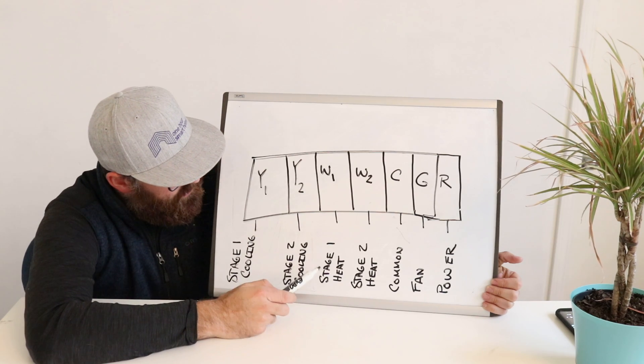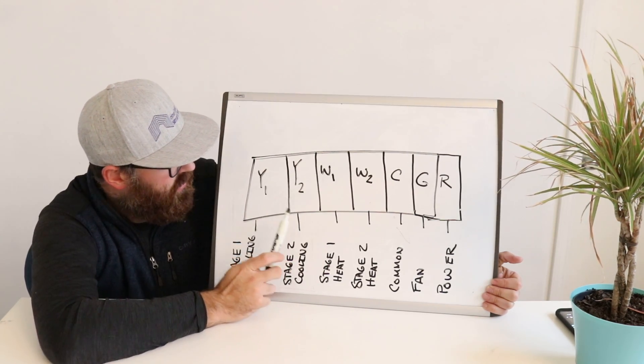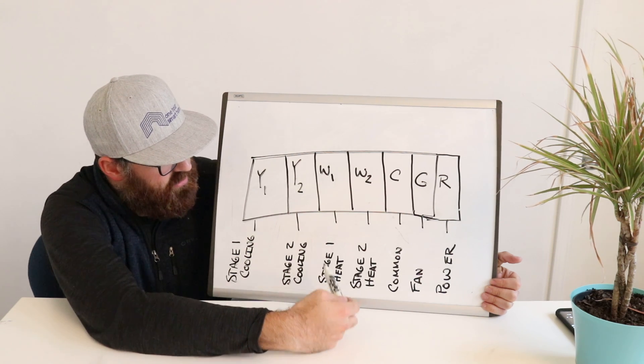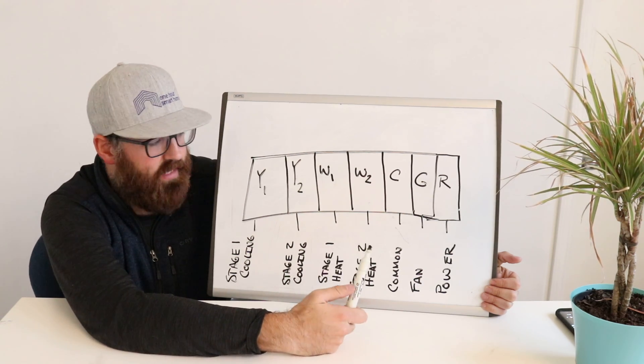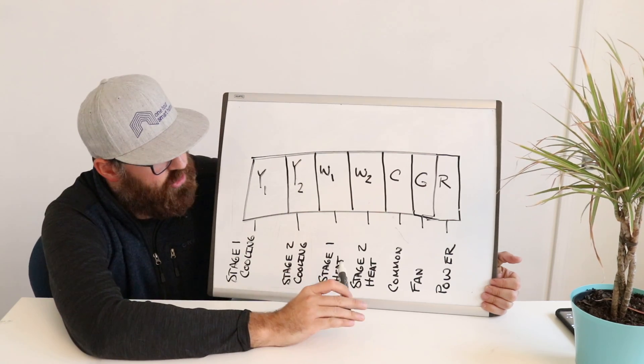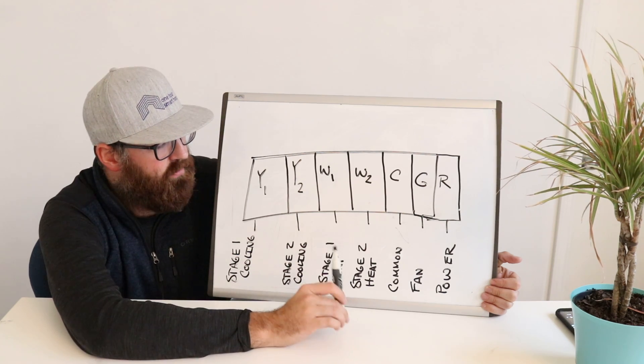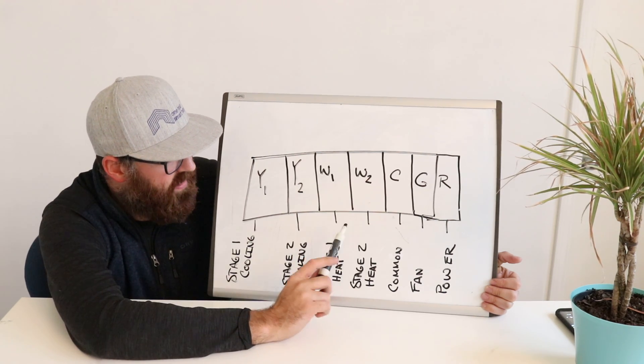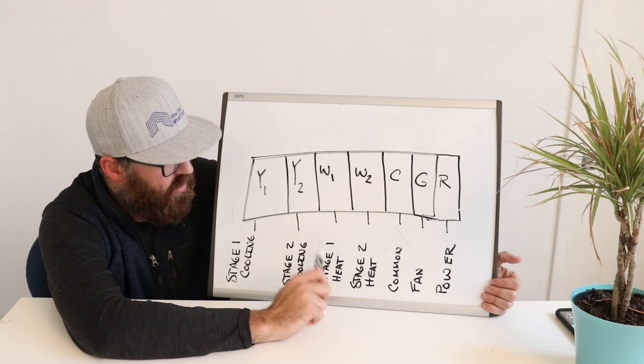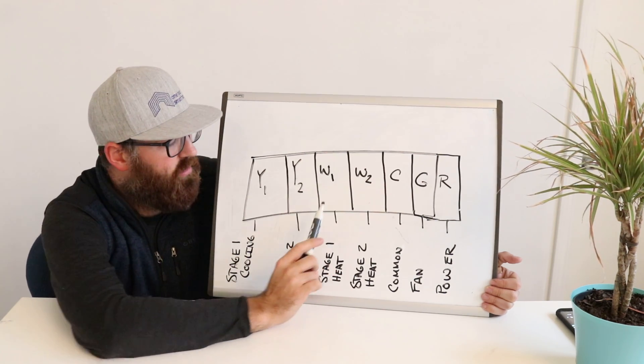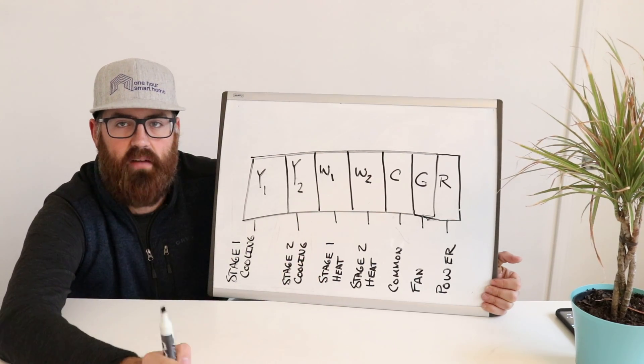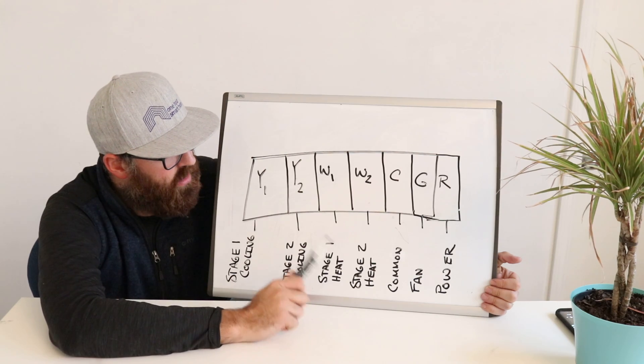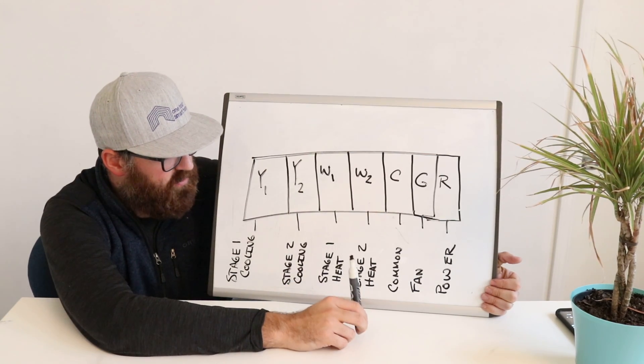So now we're on to the W's. Y is cooling. W is heat. Now the same concept applies for W1 and W2. W1 is stage 1 heat, so that's a low heat setting, the most energy efficient. Now when you're calling for a lot of heat, your thermostat really needs to ramp it up with the amount of heat that you're providing on a cold day. Then it's going to call for stage 2 heat, and that's what your W2 wire is. So you may have a W1 wire and a W2 wire, or you could just have a W1 wire or a W wire, which means you just have one stage heat. But if you've got two of these wires, a W1 and a W2, it means that you've got stage 2 heat. Just means more flexibility for heating and cooling.